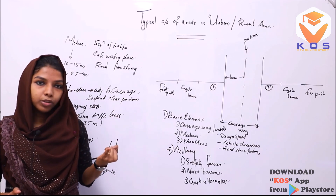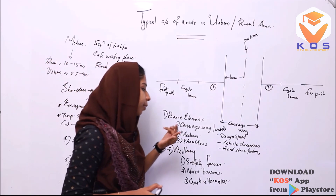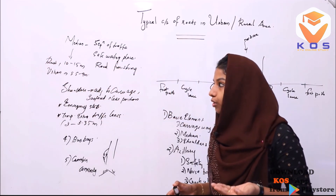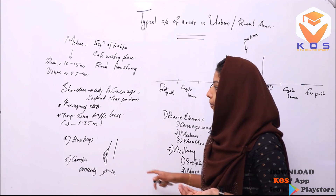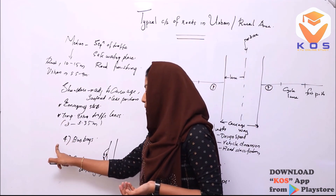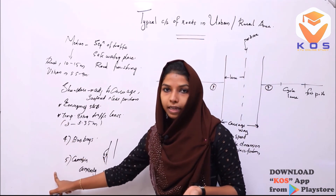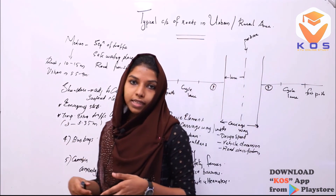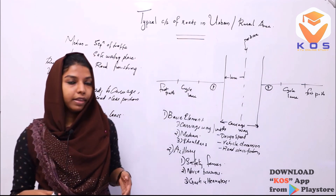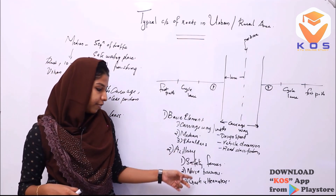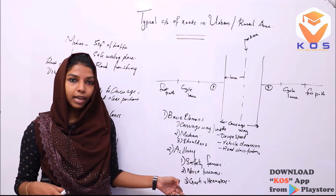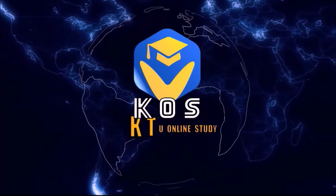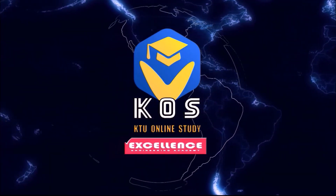In summary, the basic elements of the typical cross section are: width of carriageway, median strip or central reservation, shoulders, base, and camber. The auxiliary elements are noise barriers, safety fences, and crash attenuators. Thank you.